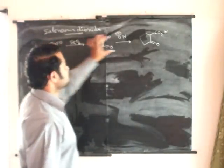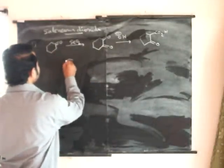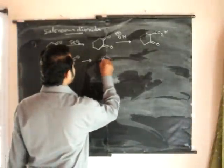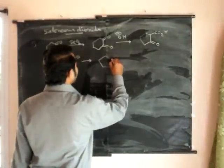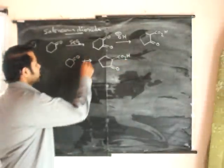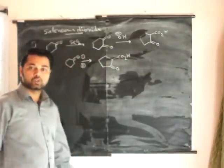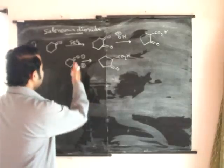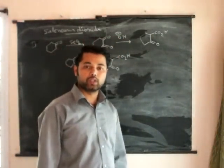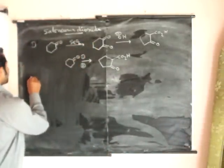So alpha-keto acids we can generate from cyclohexanone. In CSIR exams, how they can ask is: they will give the starting compound and the product, and we can suggest these two reagents. This is a good example of selenium dioxide oxidation.